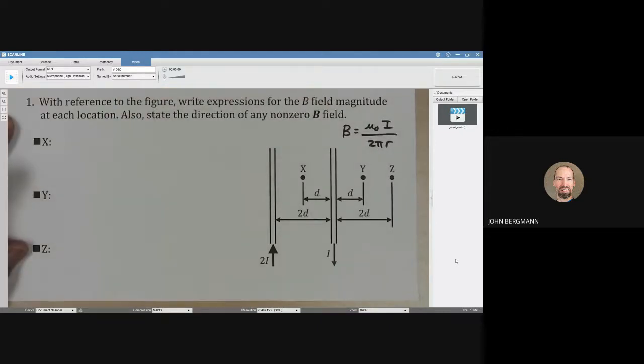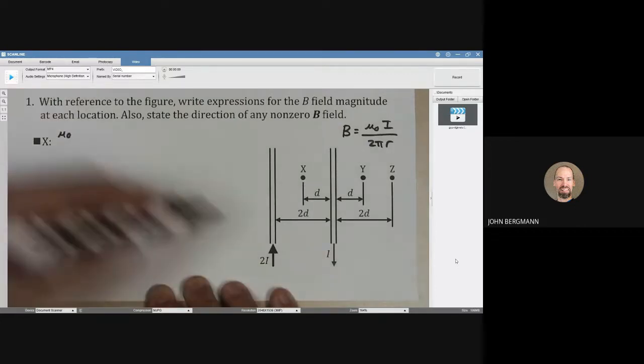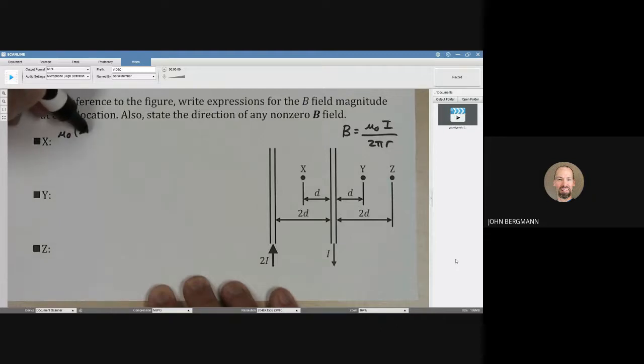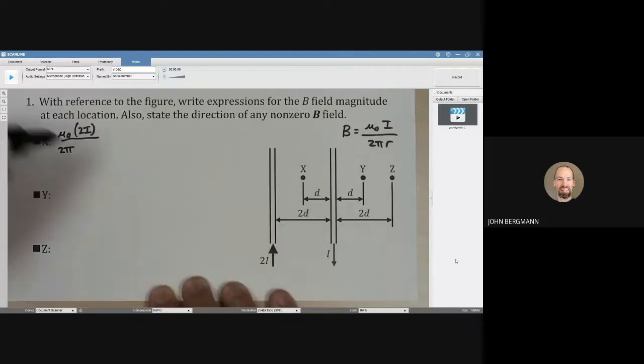We're going to take the magnetic field contributions one at a time. For point x, the magnetic field is going to be μ₀ times 2i because that's the current that's given, and we're going to divide by 2π. And what's the distance between the 2i and x? It's going to be d.